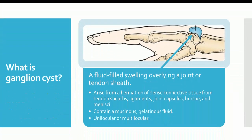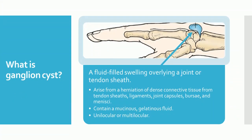A ganglion cyst is a fluid-filled swelling overlying a joint or tendon sheath. Ganglion cysts are thought to arise from a herniation of dense connective tissue from tendon sheaths, ligaments, joint capsules, bursi, and menissi. They contain a mucinous, gelatinous fluid.